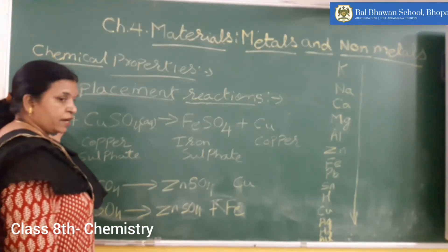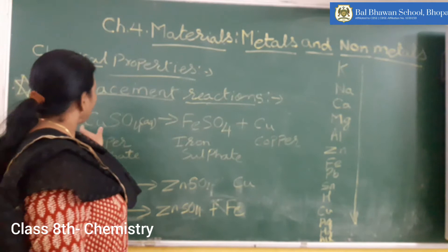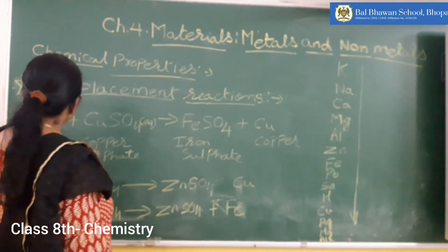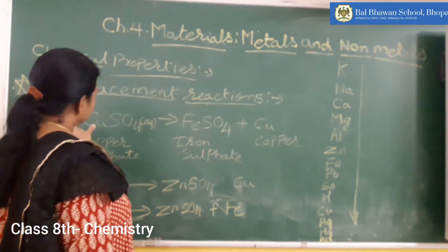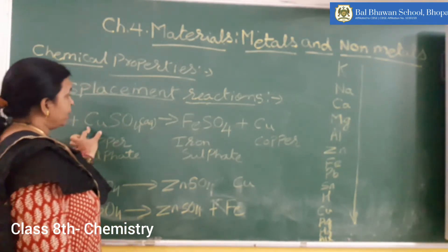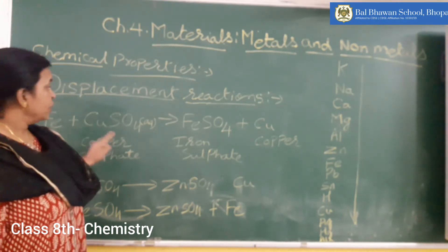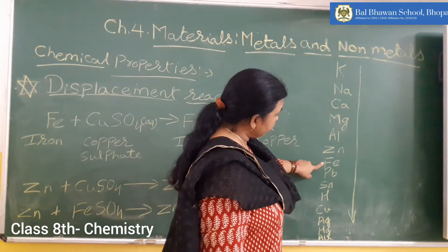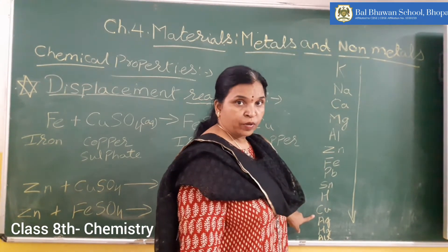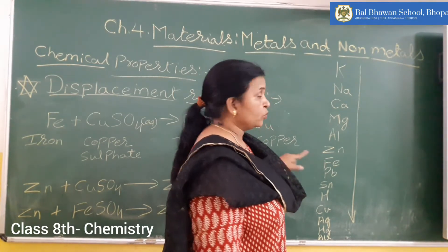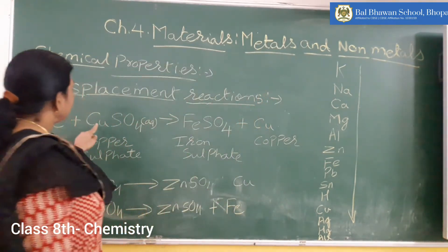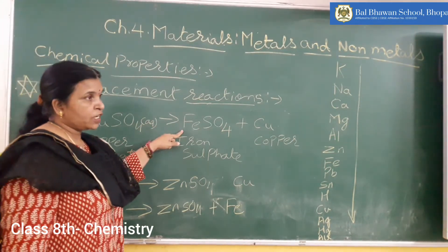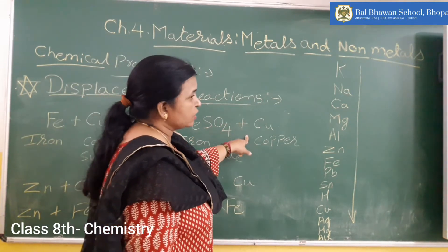Now if you compare iron with copper: the definition of displacement says the more reactive element displaces the less reactive element from its salt solution. You can clearly find in the reactivity series that iron is placed above copper, which means iron is more reactive. That is why it displaces copper from copper sulfate solution, producing ferrous sulfate solution plus free copper.